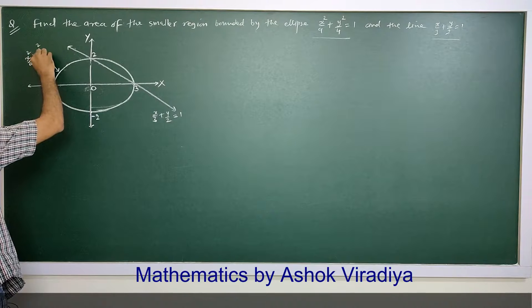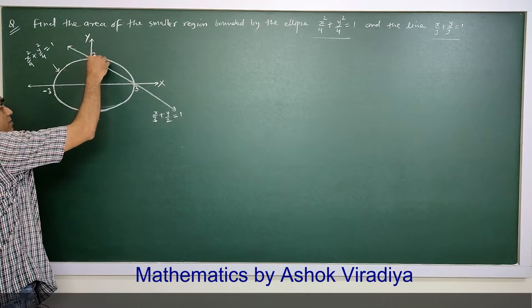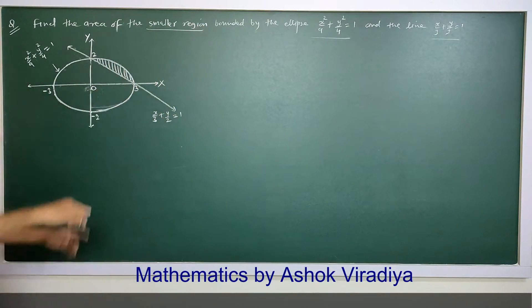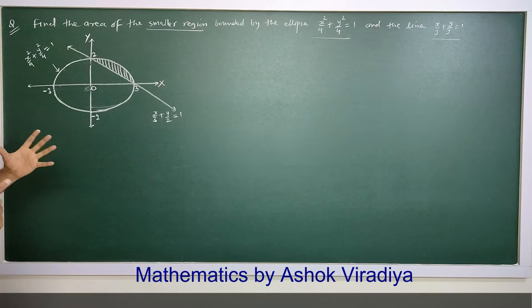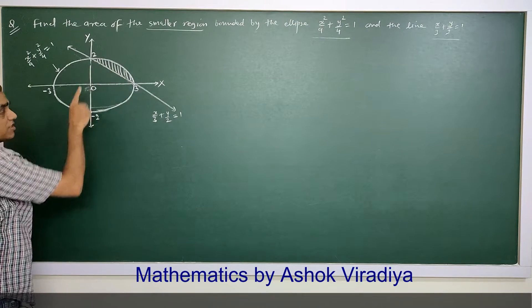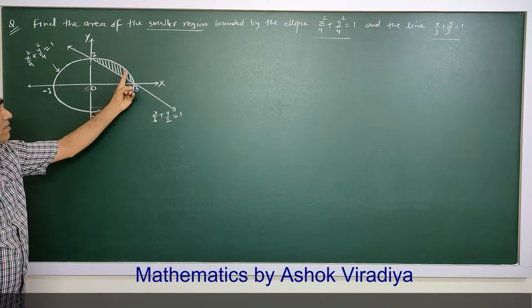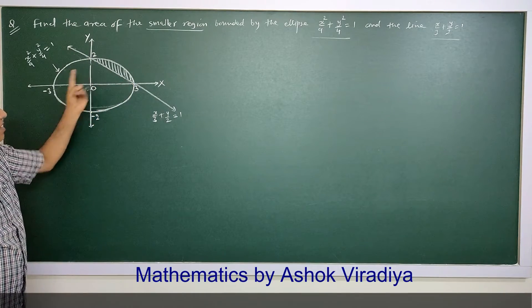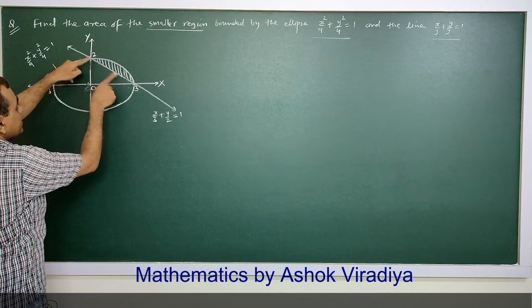So the line is x upon 3 plus y upon 2 equal to 1, and the ellipse is x square by 9 plus y square by 4 equal to 1. By the ellipse and this line, a smaller region is bounded. We want the area of this smaller region, which can be calculated by area of region covered by ellipse in first quadrant minus area of the triangle.